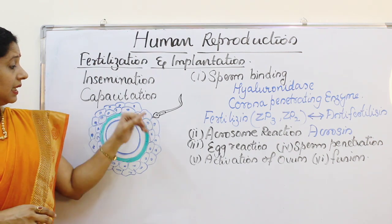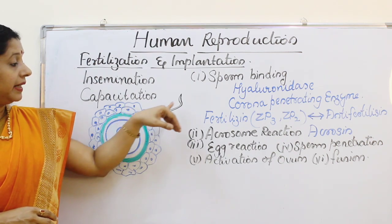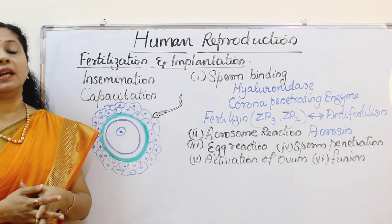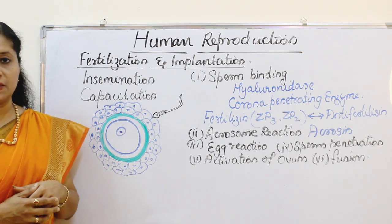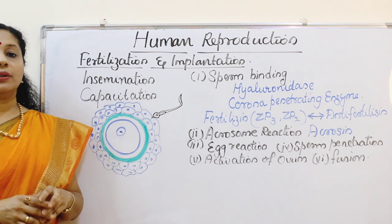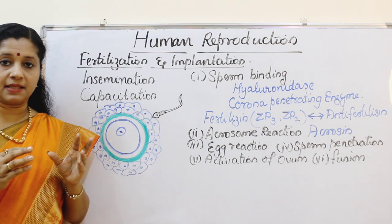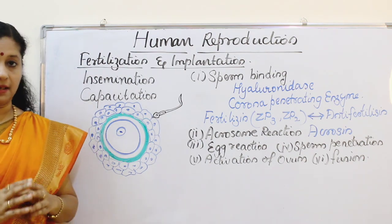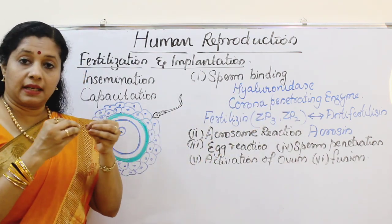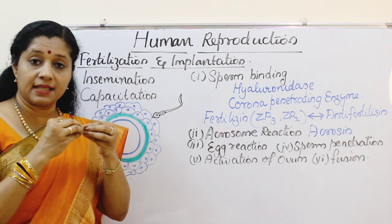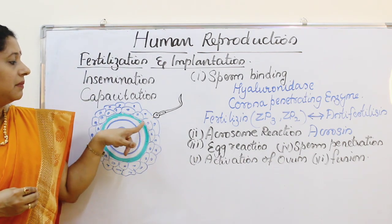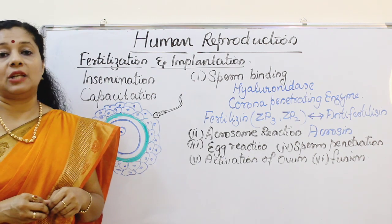When the sperm comes near the ovum, the first step is sperm binding — the approximation of the sperm to the ovum. It has to reach the zona pellucida layer, so first it must penetrate through the corona radiata. Certain enzymes help in this: the acrosome wall, which was weakened during capacitation, now secretes two types of enzymes — hyaluronidase, which digests the hyaluronic acid holding the corona radiata follicular cells together, and the corona-penetrating enzyme. With the help of these two, the sperm can now reach and touch the zona pellucida layer.